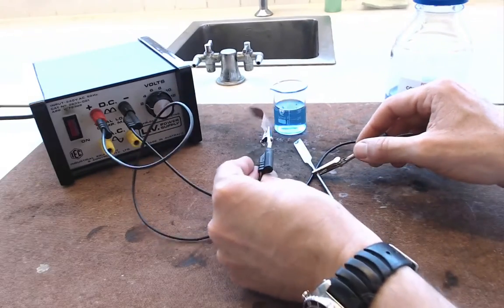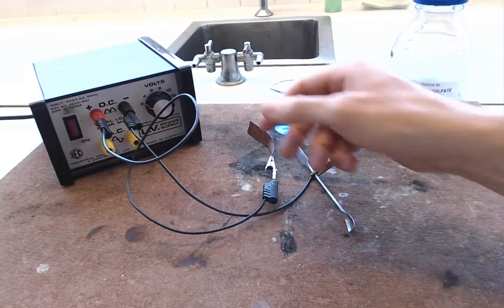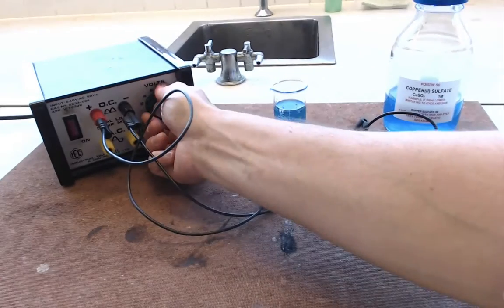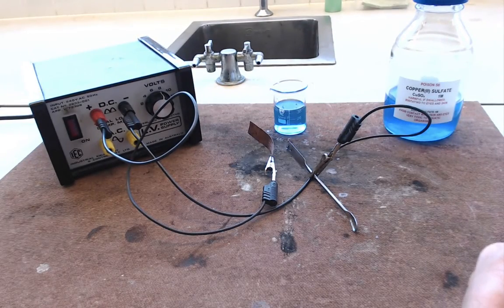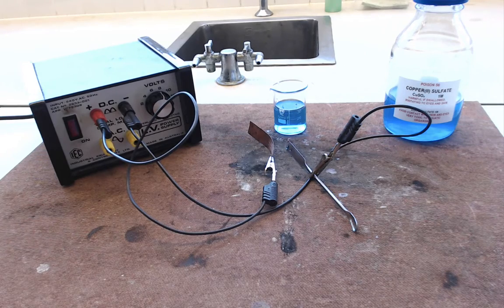This time you're going to try plating it on a different voltage. So we're going to turn our power pack up to 8 volts this time. And that will cause things to plate quite a lot more quickly.